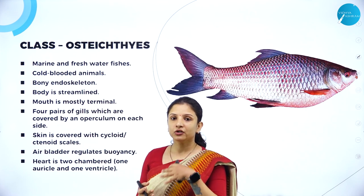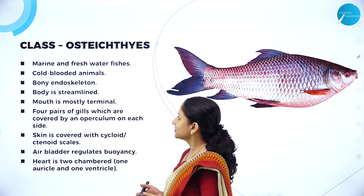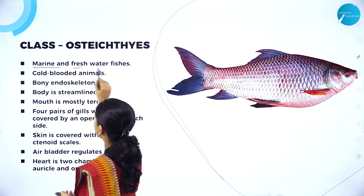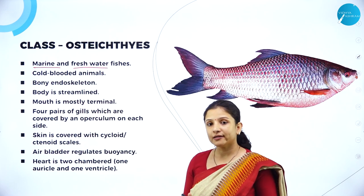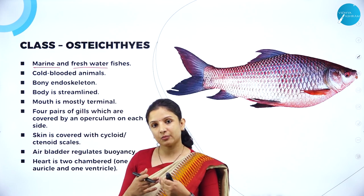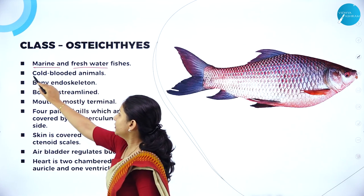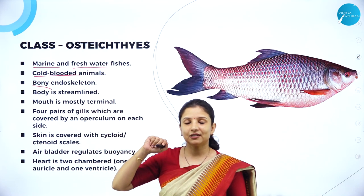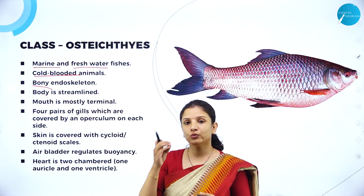If you need to know the difference, you can look at the previous session where I covered class Chondrichthyes. Class Osteichthyes are the marine and freshwater fishes. They are cold-blooded animals — that is, they are poikilotherms — wherein these organisms are not capable of regulating their body temperature. Their body temperature changes according to the external temperature. They have a bony endoskeleton, whereas Chondrichthyes had a cartilaginous endoskeleton.